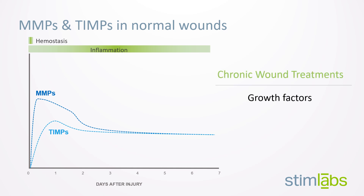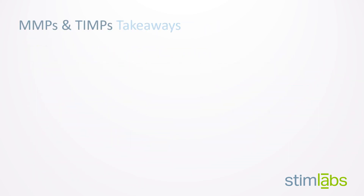To kickstart healing in chronic wounds and return them to a typical healing pathway, this imbalance must be rectified. Many therapeutic options center their treatment philosophy around the application of growth factors to stimulate cell growth. However, many researchers have expressed concern with a growth factor-only treatment plan, stating that growth factor treatments will probably only be effective if accompanied by components that regulate MMPs — components like TIMPs.